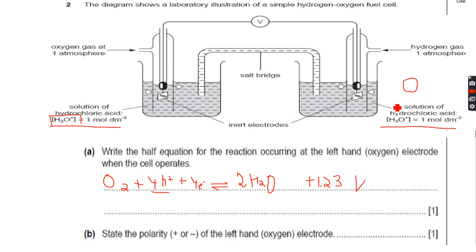Since zero is less than +1.23, this will be the negative electrode and hence this will be the positive electrode. The oxygen electrode, the left hand electrode, is positive because it is greater than the hydrogen electrode. Electrons are flowing in this direction.